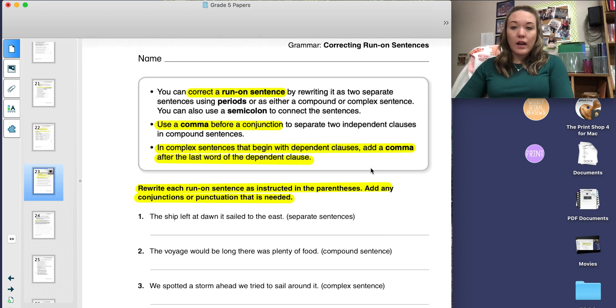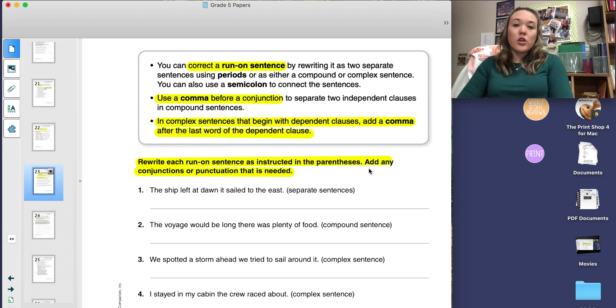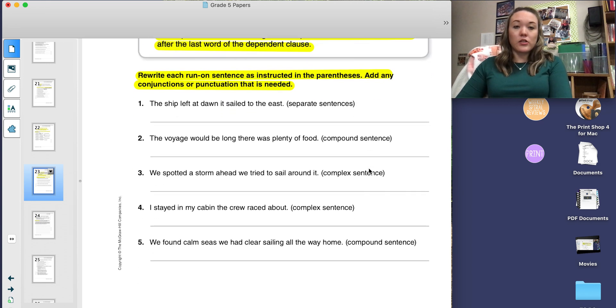Page 23 is again correcting run-on sentences. You can correct a run-on sentence by rewriting it as two separate sentences using periods or as either a compound or complex sentence. You can also use a semicolon to connect the sentences. Just a reminder, you should be using a comma before a conjunction to separate two independent clauses in a compound sentence. And in a complex sentence with the start of it being a dependent clause, you need to add a comma after the last word of the dependent clause. This page says to rewrite each run-on sentence as instructed in the parentheses. Add any conjunctions or punctuation that is needed.